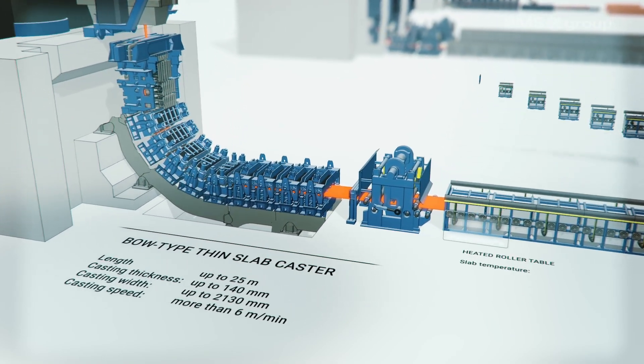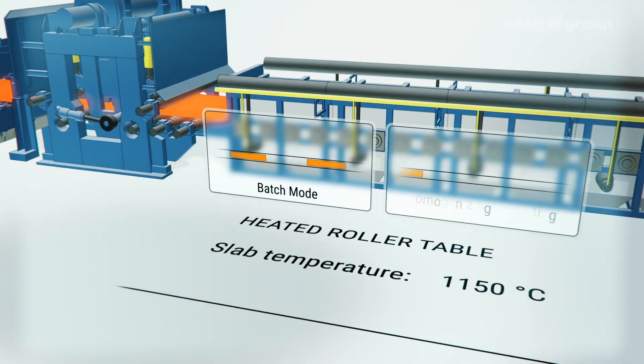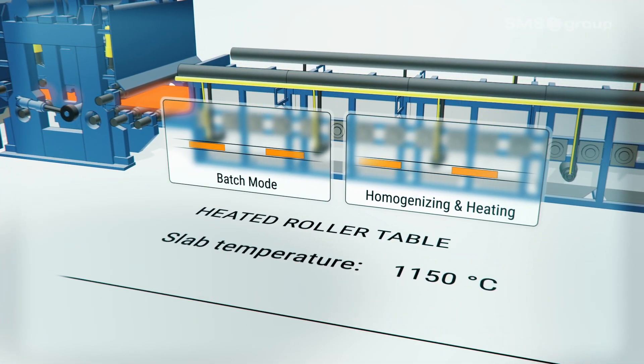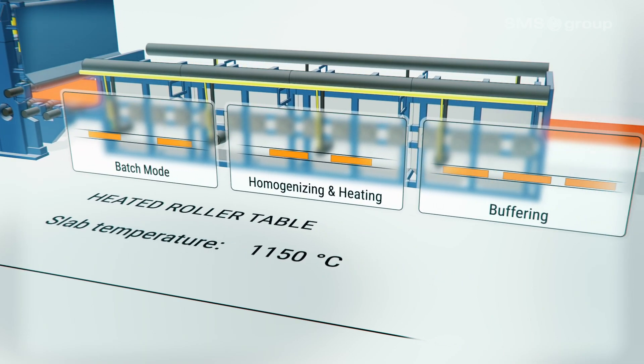The heated roller table makes the batch mode possible. The temperature sequence avoids precipitation during the process, minimizing alloying costs. In addition, it provides a buffer time for work roll changes during casting.